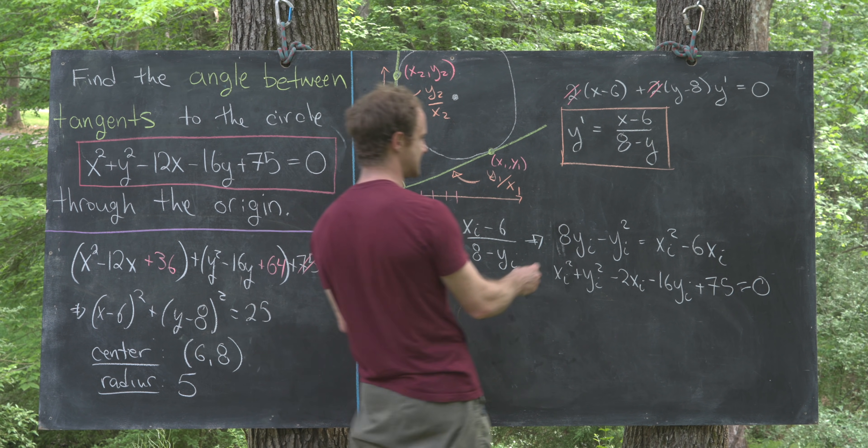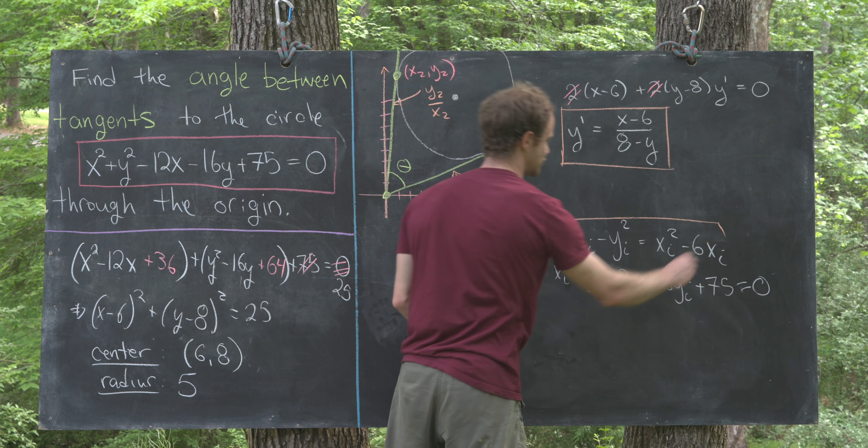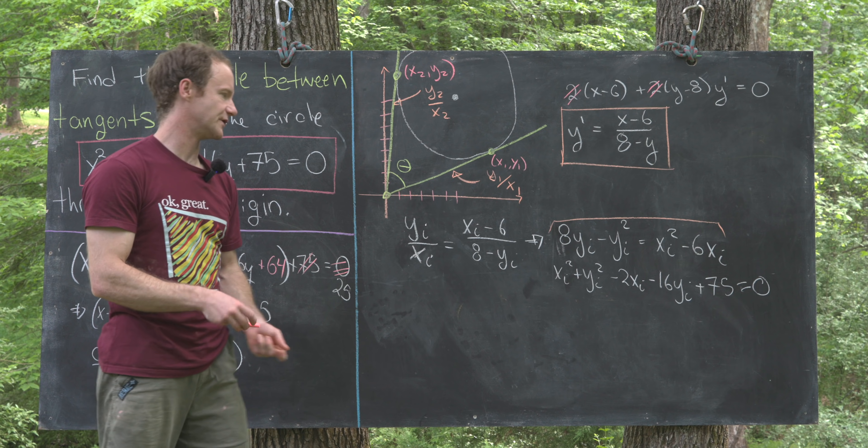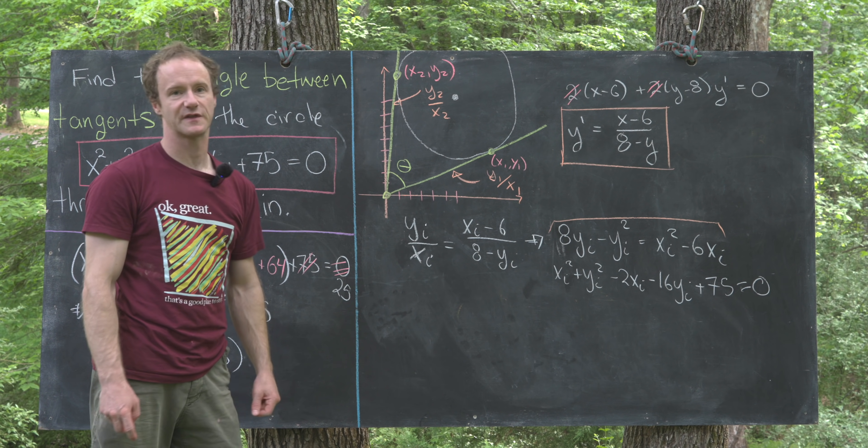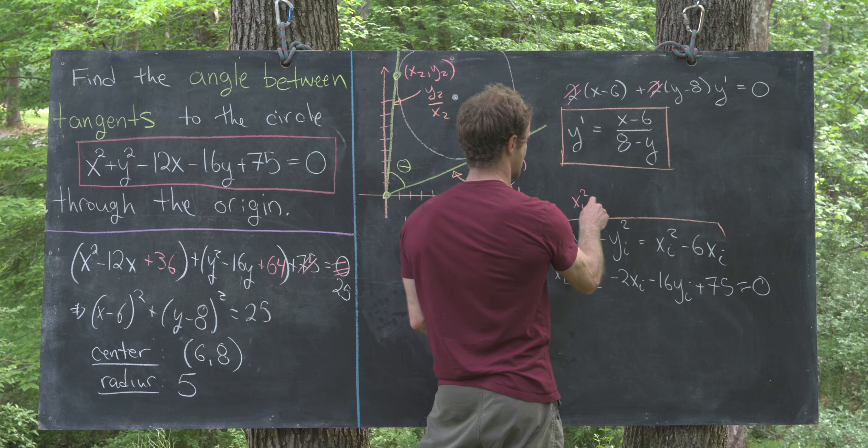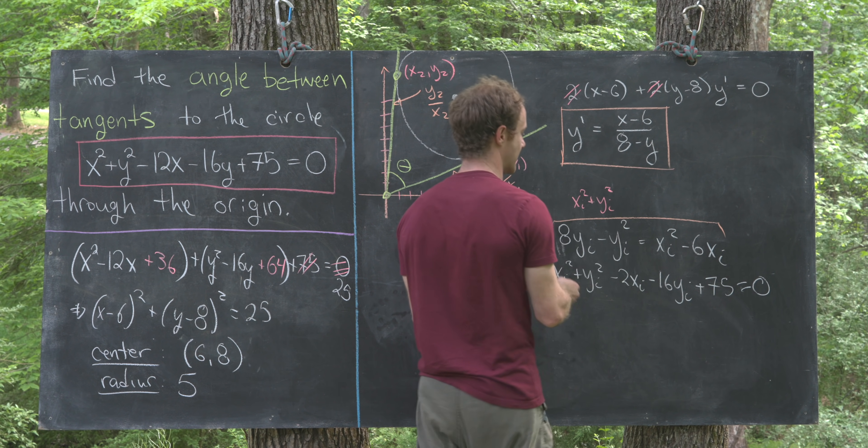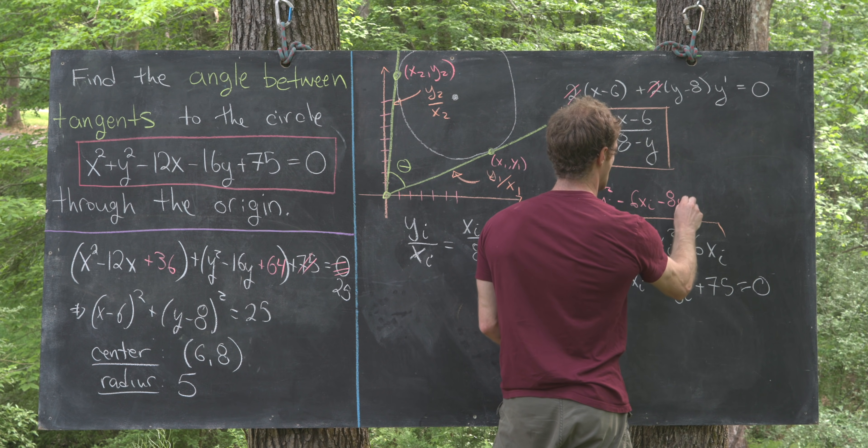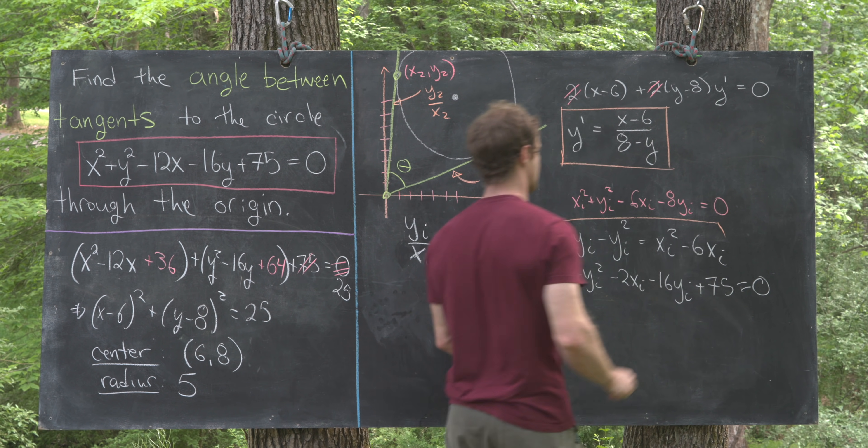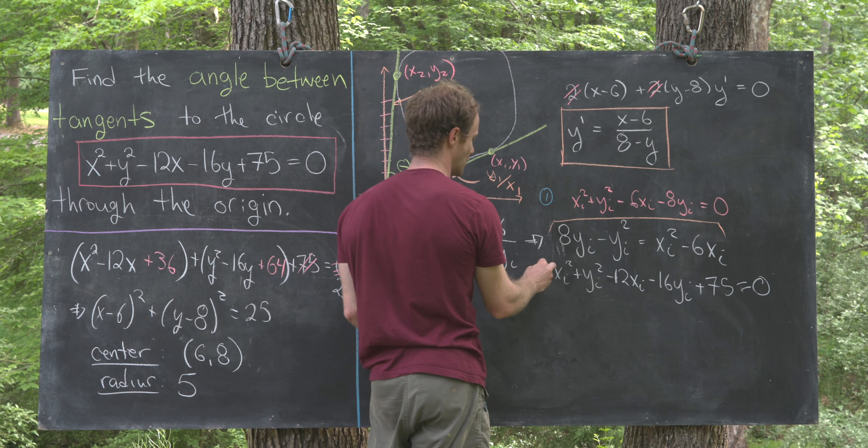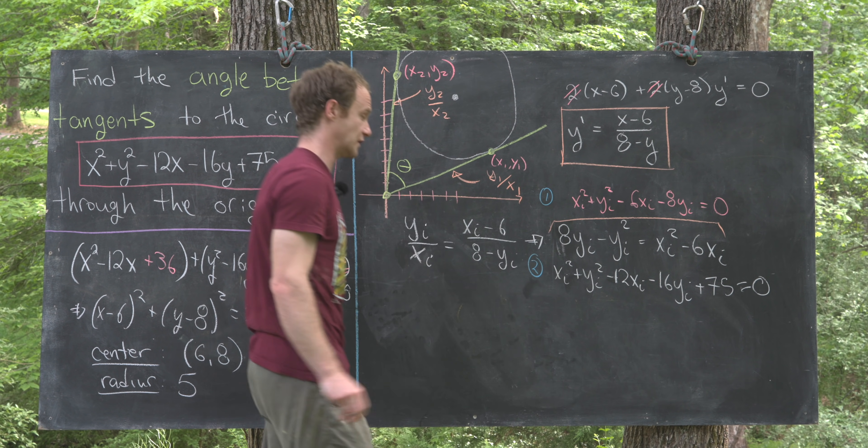We would like to take this first equation and set it up so that zero is on one side so it can be combined with the second equation. That's going to give us xi squared plus yi squared minus 6xi minus 8yi equals 0. We've got equation 1 and equation 2.